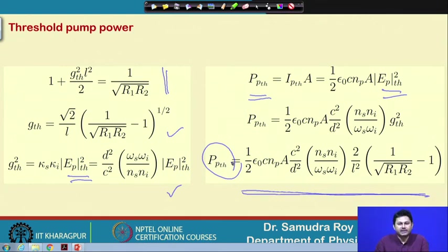To conclude today's class, we studied in detail the optical parametric oscillator and derived the threshold pump power condition for a singly resonant oscillator. In the next class we will extend this concept to the case where two waves are resonating simultaneously — the doubly resonant oscillator — and find the corresponding threshold conditions. Thank you for your attention and see you in the next class.